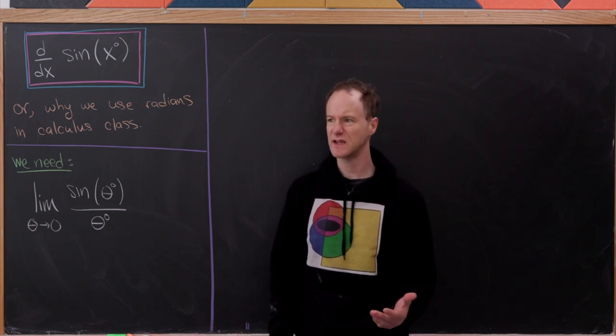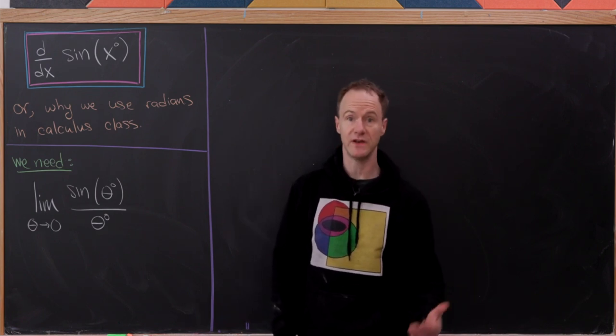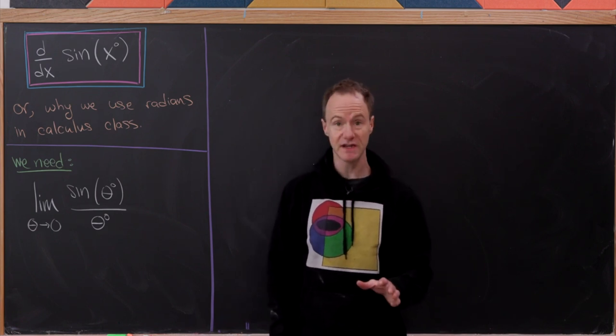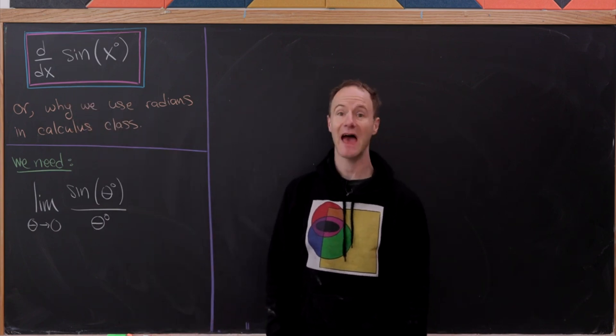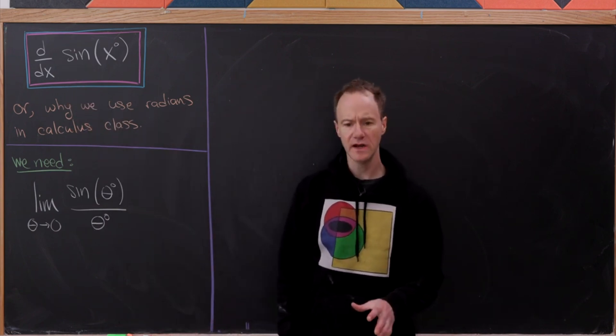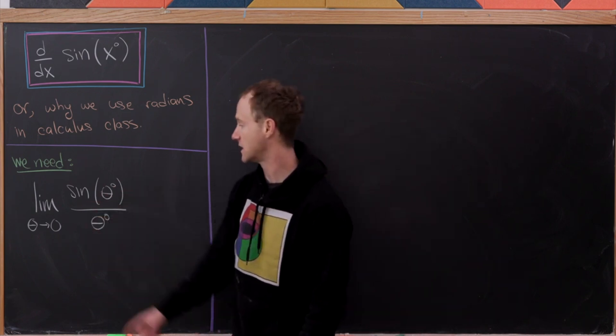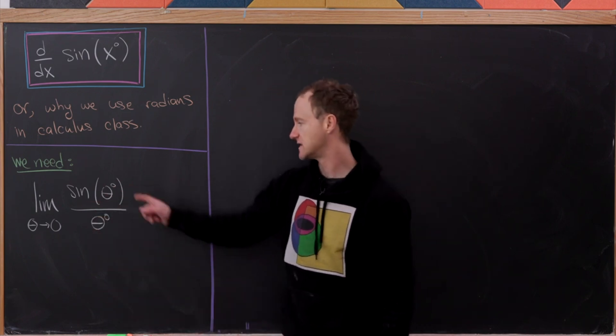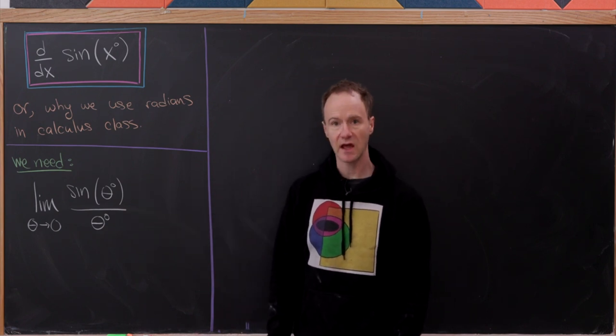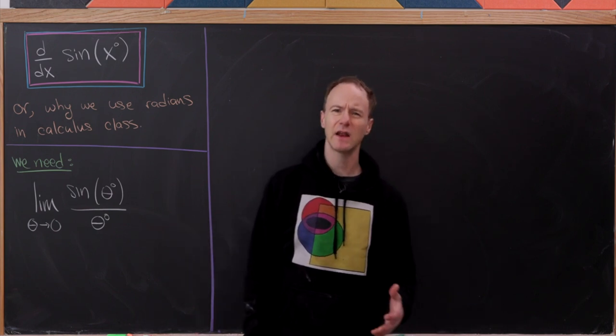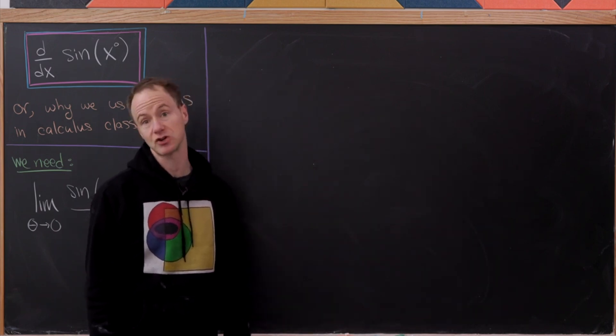So our goal for today is to give one example of this not niceness for derivatives using degrees. In particular we'll find the derivative with respect to x of sine of x degrees. Now we're going to need a tool for that, and that tool is the limit as theta goes to zero of sine of theta degrees over theta degrees. We'll prove this, but in order to prove this we need a certain figure, so let's get that picture on the board.